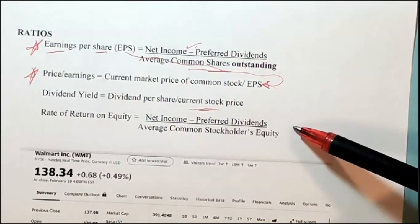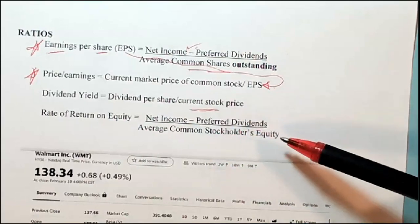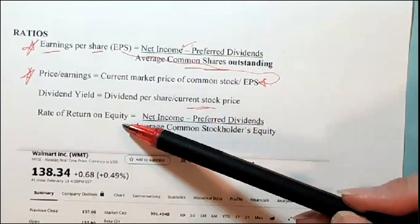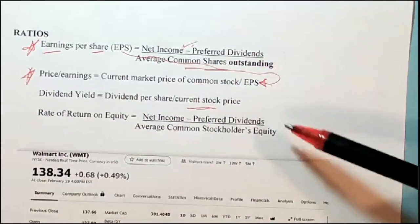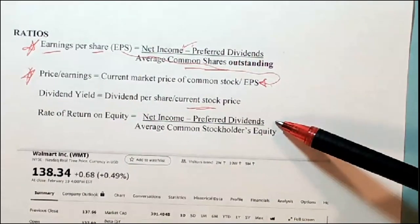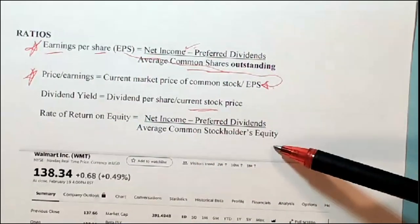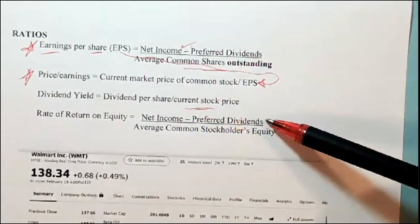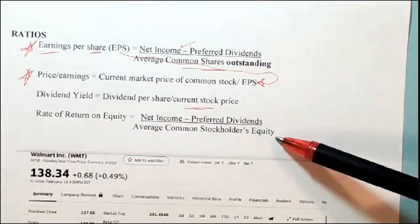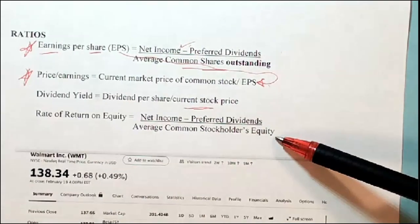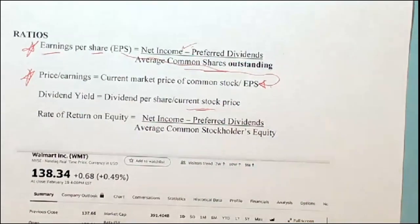Rate of return on equity, like all our rate of return ratios, is net income over equity. You subtract out preferred dividends because before the common shareholders are paid, those preferred dividends must come out of net income first. Preferred dividends don't appear on the income statement, but those shareholders get paid before the common shareholders. That's rate of return on equity.